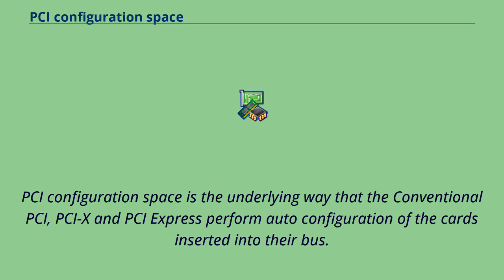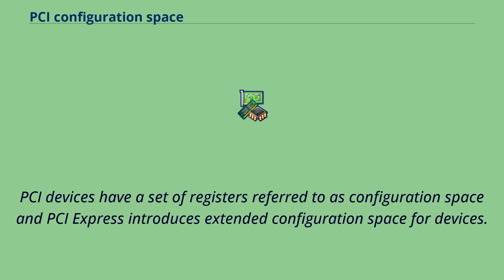PCI configuration space is the underlying way that conventional PCI, PCI-X, and PCI Express perform auto-configuration of cards inserted into their bus. PCI devices have a set of registers referred to as configuration space, and PCI Express introduces extended configuration space for devices.